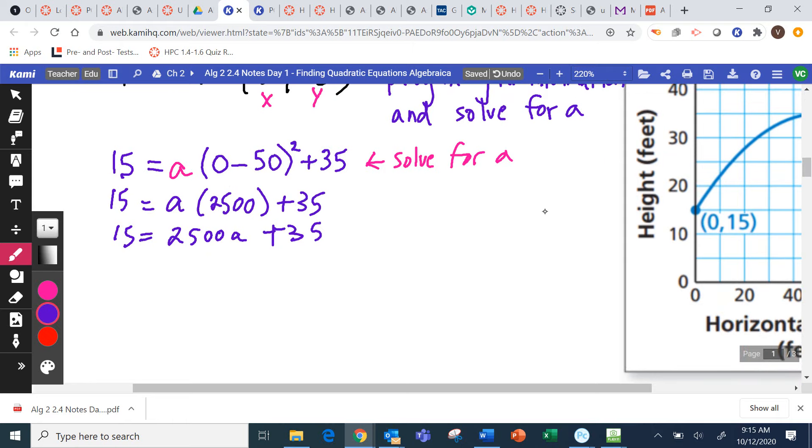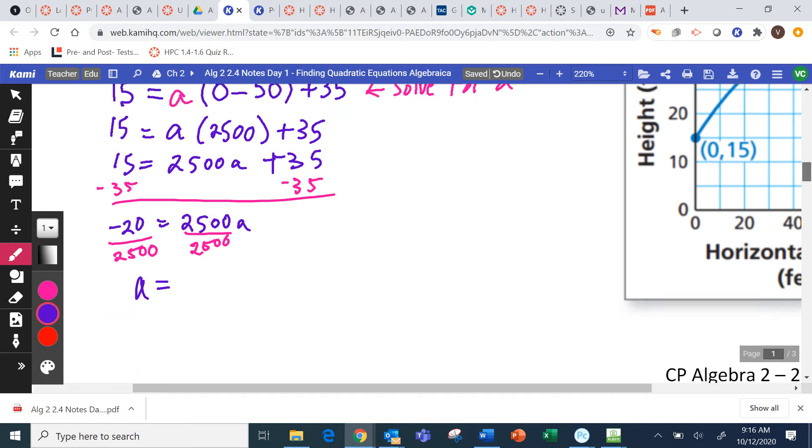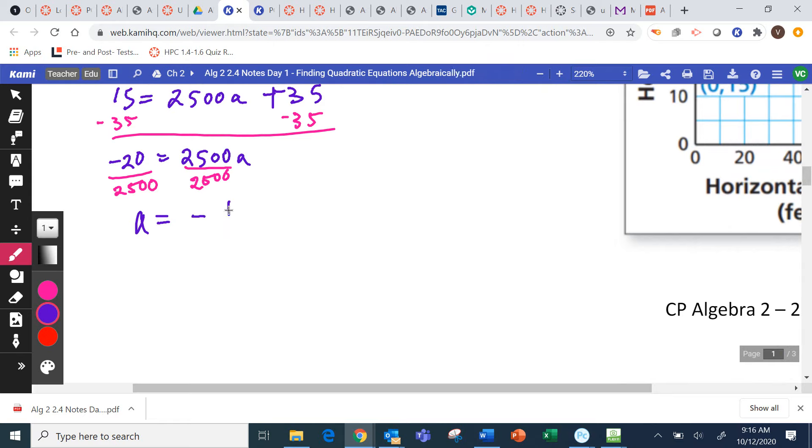I'm going to subtract 35 from both sides. And then divide both sides by 2,500. And when I do that, I get that A is negative 1 over 125, or negative 0.008. But these are exactly the same numbers, just one is a fraction and one is a decimal.